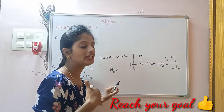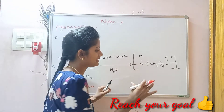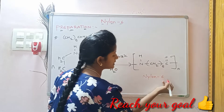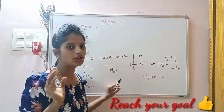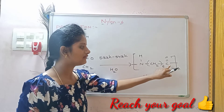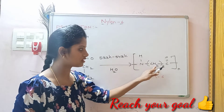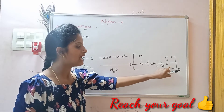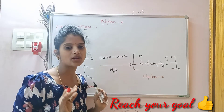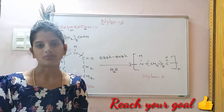Here, N is the number of repeating units. This is the structure of Nylon 6. It is called Nylon 6 because in the structure there are a total of 6 carbon atoms — five CH₂ carbons plus one carbonyl carbon.